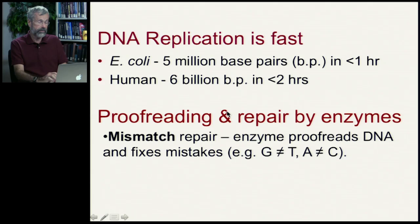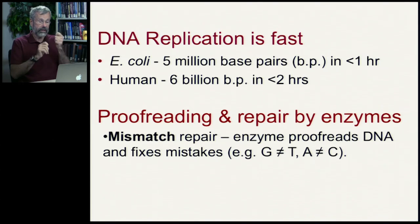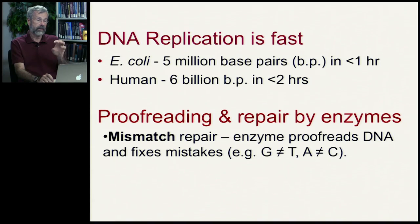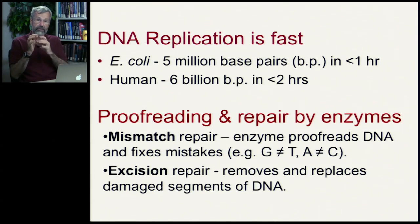The first repair mechanism is called mismatch repair, where an enzyme proofreads the DNA and fixes mistakes — so if there's been an attempt to pair G with T, or A with C, it removes the wrong nucleotide and brings back the right one. There's also what's called excision repair: if sequences along the DNA have been damaged, it identifies and removes those bad sectors and replaces those damaged segments of DNA.